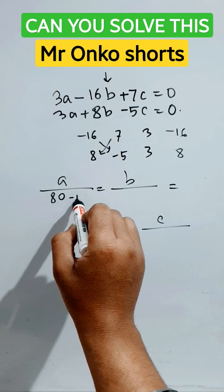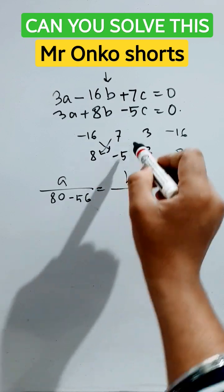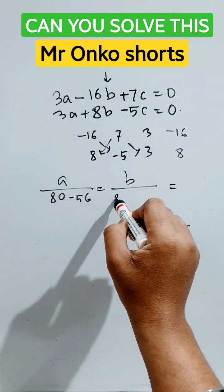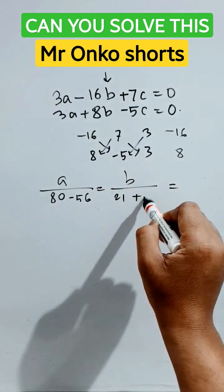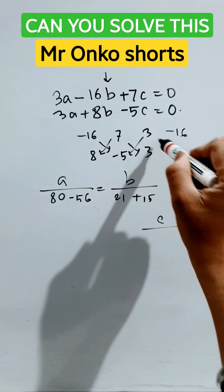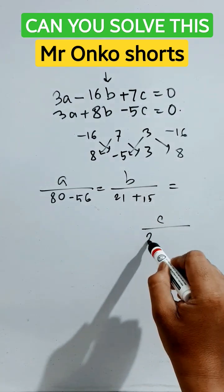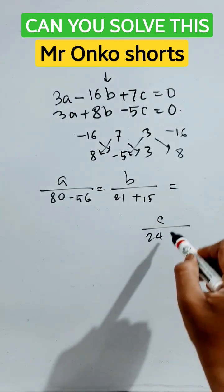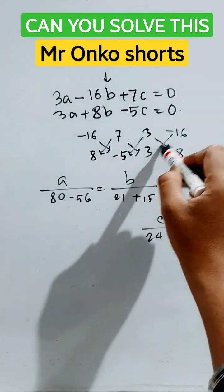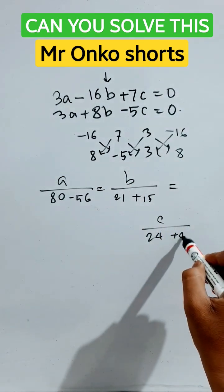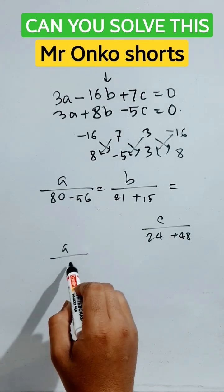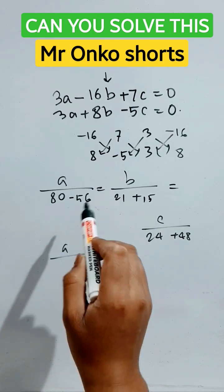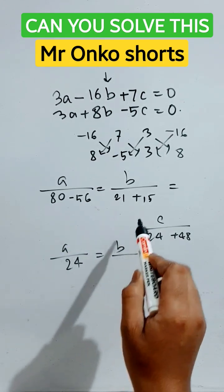That will be 80 minus 56, here it is 21, minus minus plus, that is 15, and here it is 24, minus minus plus, it is 48. So it will be a divided by 24 equals to b divided by 36.